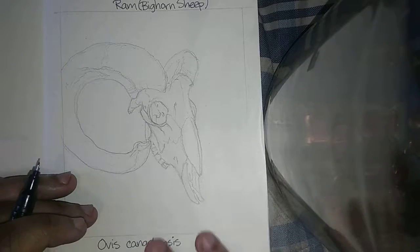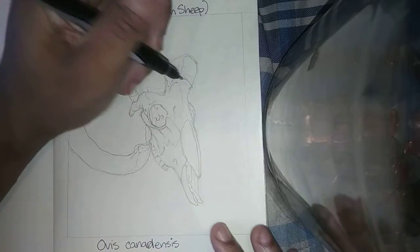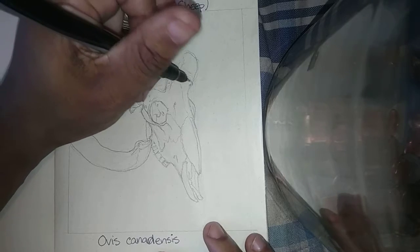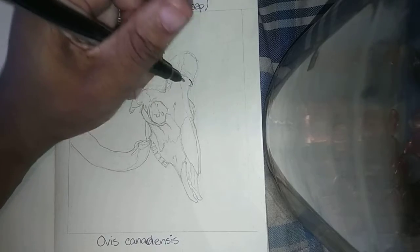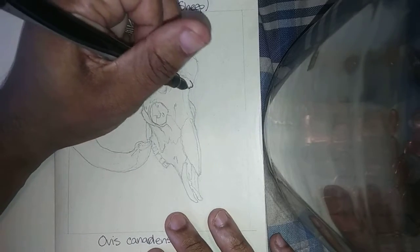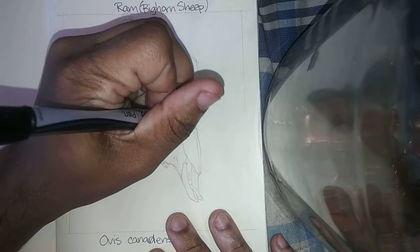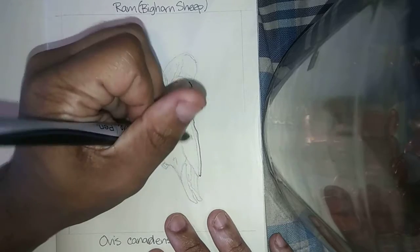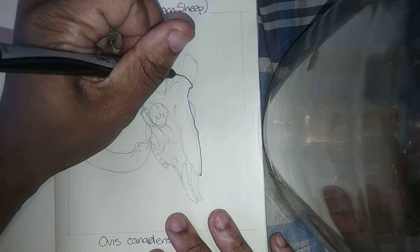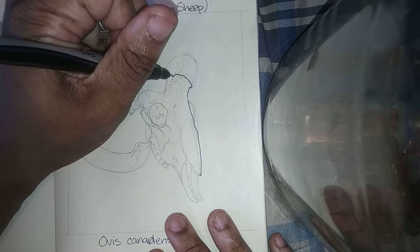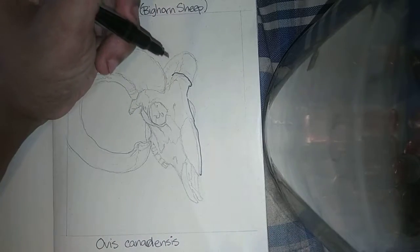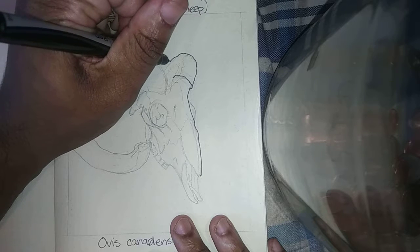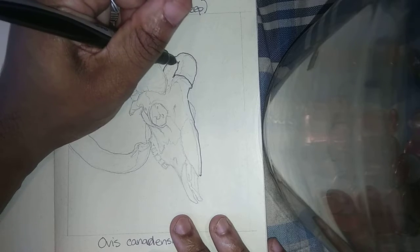Hello everyone and welcome back to the Thomas Gallery. Today we have a drawing of Ovis canadensis, more commonly known as the ram or bighorn sheep. For those who are confused, a ram is a male sheep. A female sheep is called a ewe, spelled E-W-E. A baby sheep is a lamb, L-A-M-B.